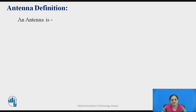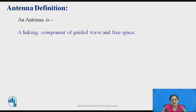Now let us define what is the antenna. An antenna can be defined in different ways. An antenna is a linking component of guided wave and free space. From the source, when electromagnetic waves are propagated and passing through the transmission media such as a waveguide, it is considered as the guided wave. When this wave is radiated into free space, then the antenna is considered as the important component between this guided wave and free space.